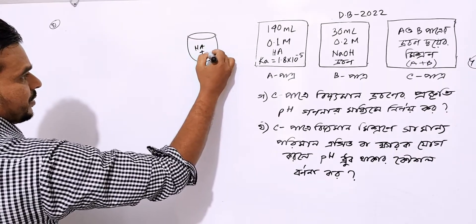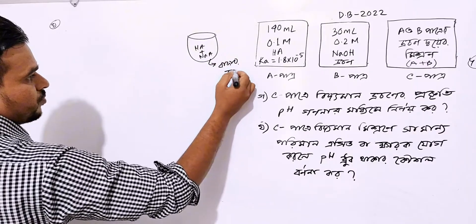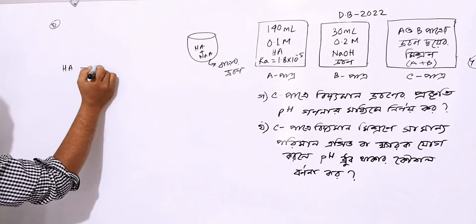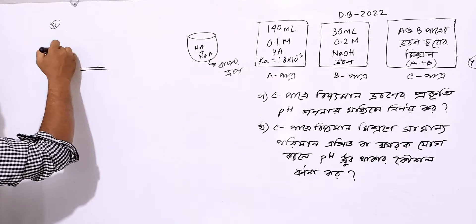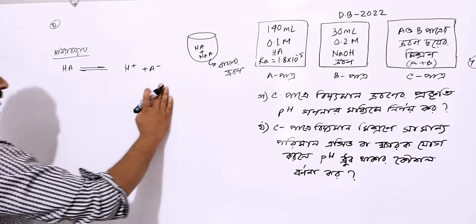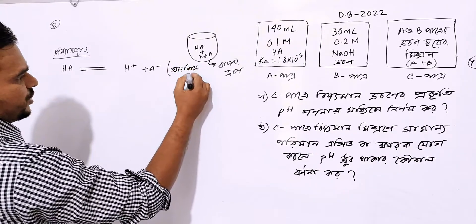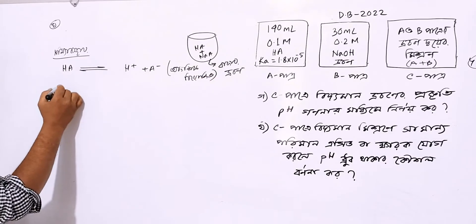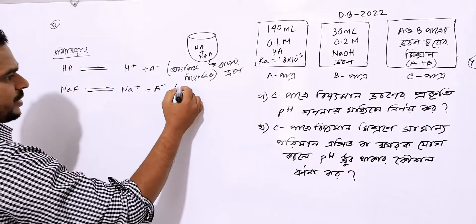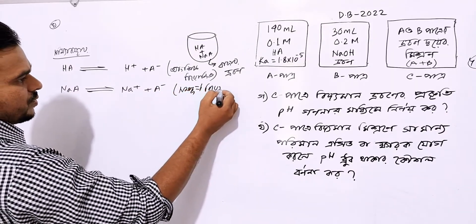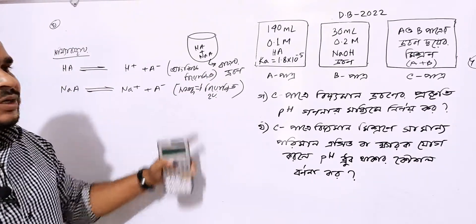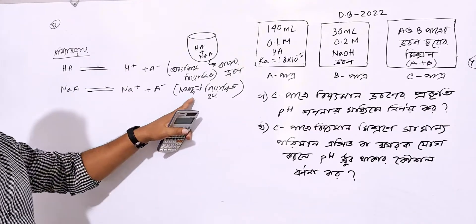Acid plus acid — when you add it, it undergoes partial ionization. The acid stays in equilibrium — same base stays in equilibrium. So partial ionization occurs here. Write it down: partial ionization happens, not complete ionization.